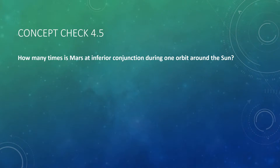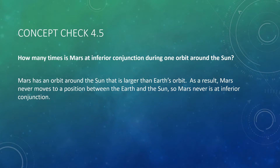Here's our next concept check: How many times is Mars at inferior conjunction during one orbit around the Sun? Go back, take a look at what inferior conjunction means, look at that image, and try to figure out how many times it would be at that configuration as it goes around the Sun once. The answer: Mars has an orbit larger than Earth's, so Mars never moves to a position between the Earth and the Sun. Mars is never at inferior conjunction.